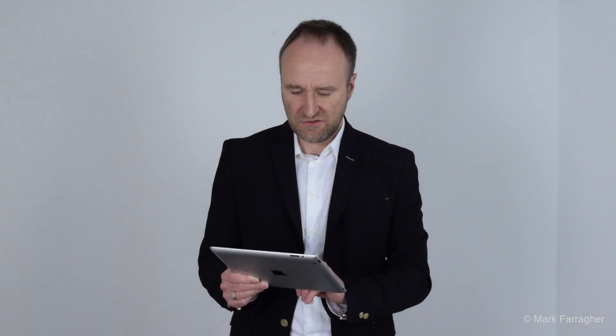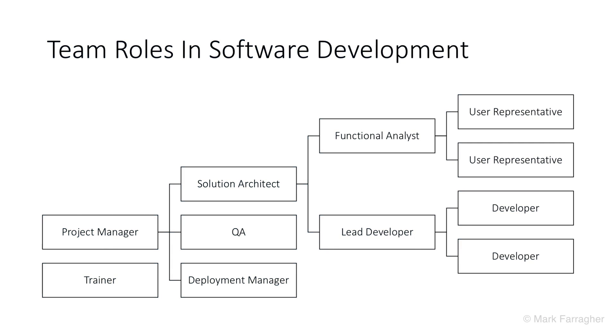Everybody who does software development in a fairly large team — say 10 people or so — will have these roles within an organization. When you draw them in an org chart, you get this picture. Let's go through all of these roles one by one, starting with a high-level overview before we get into detail later on.